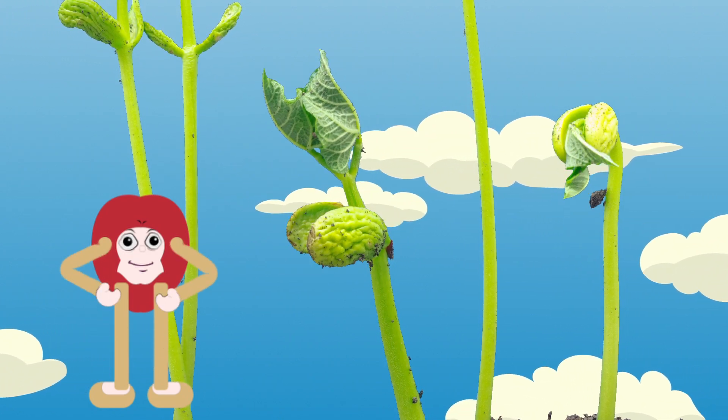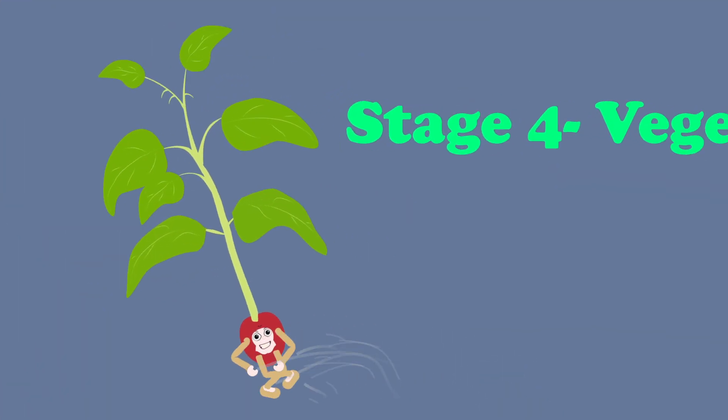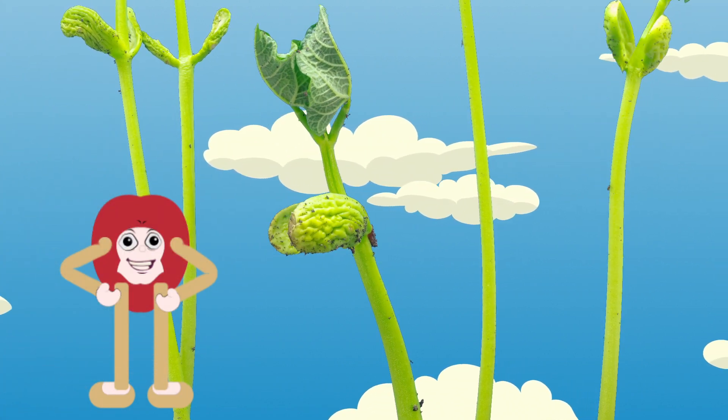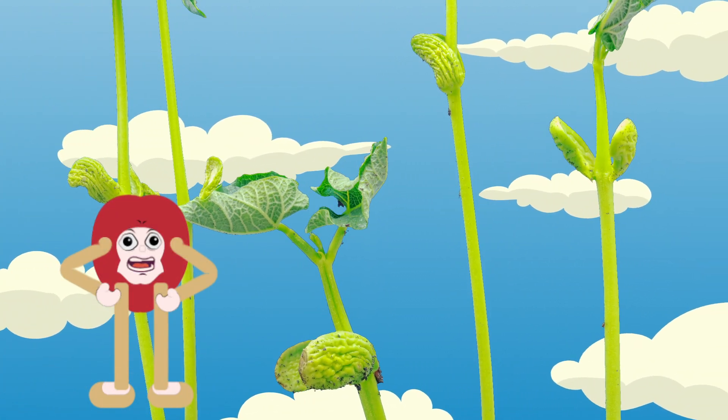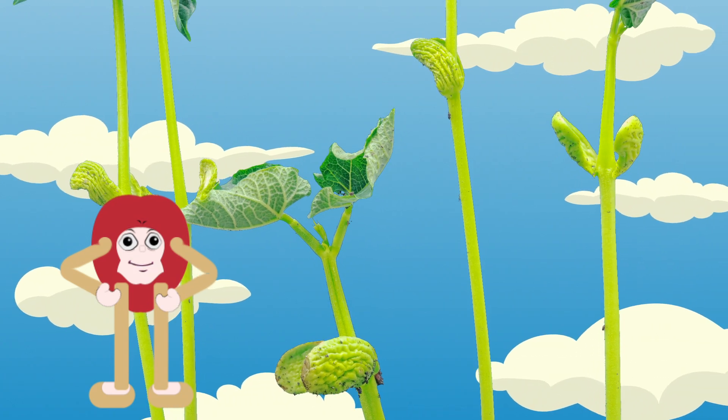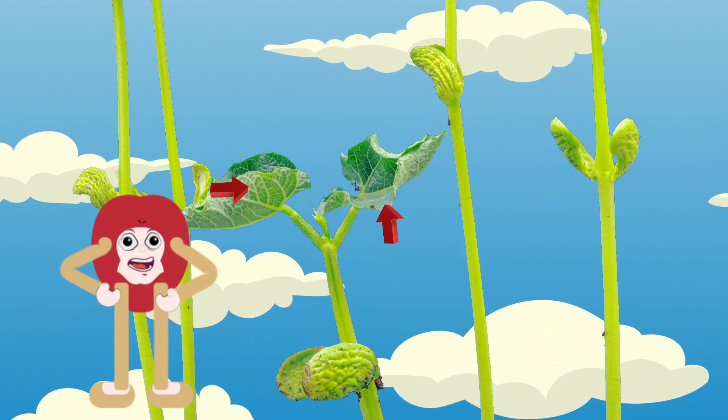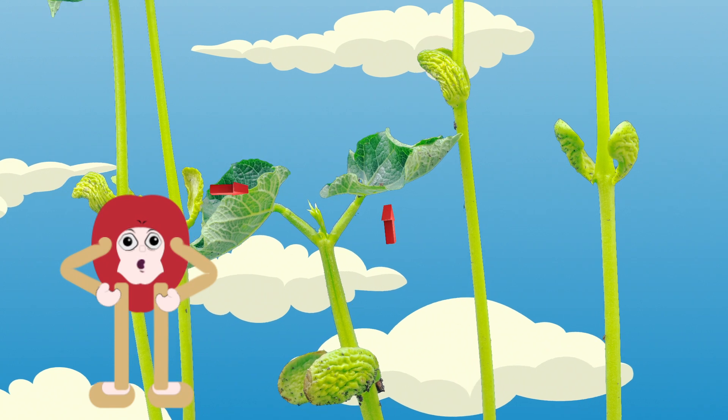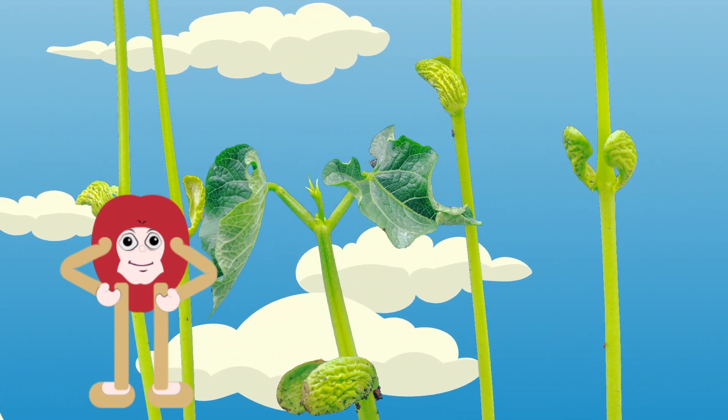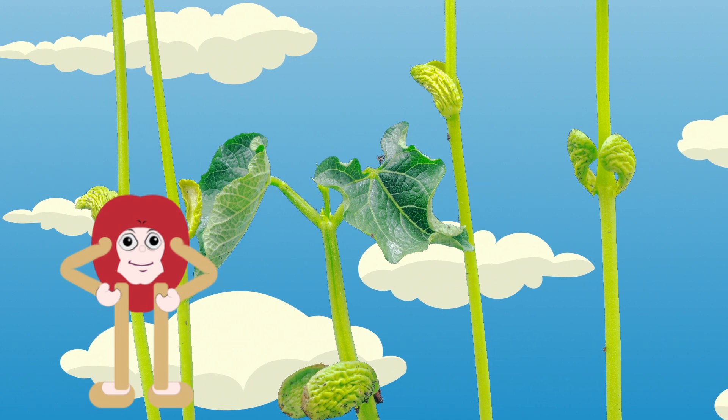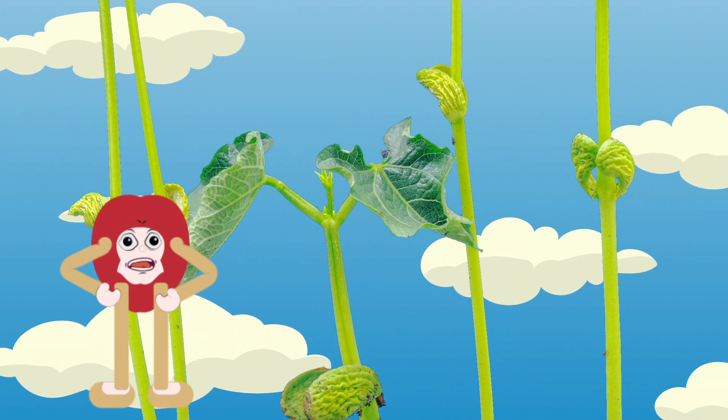Stage 4: The Vegetative Stage. In this stage, the plant is getting bigger and stronger. It is making more leaves and branches. During this stage, the bean plant focuses on growing lots of green leaves. These leaves help the plant to make food through a process called photosynthesis.